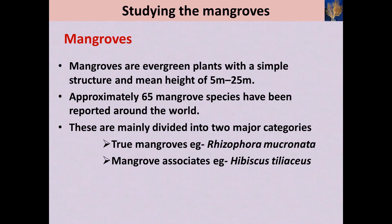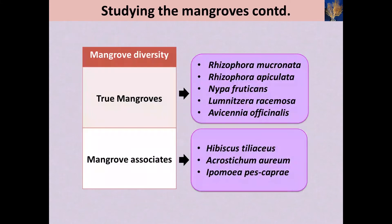The mean height of mangroves varies from 1 meter to 25 meters. Approximately 65 mangrove species have been reported around the world. These mangrove species are basically divided into two major categories: true mangroves and mangrove associates. Rhizophora mucronata, Rhizophora apiculata, Nipa fruticans, and Avicennia officinalis are examples of true mangrove species. Hibiscus tiliaceus and Acrostichum aureum are categorized under mangrove associates.